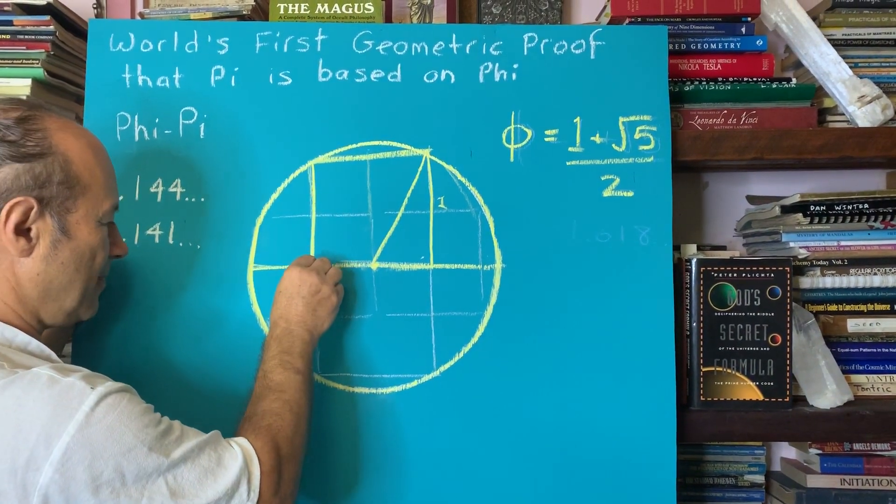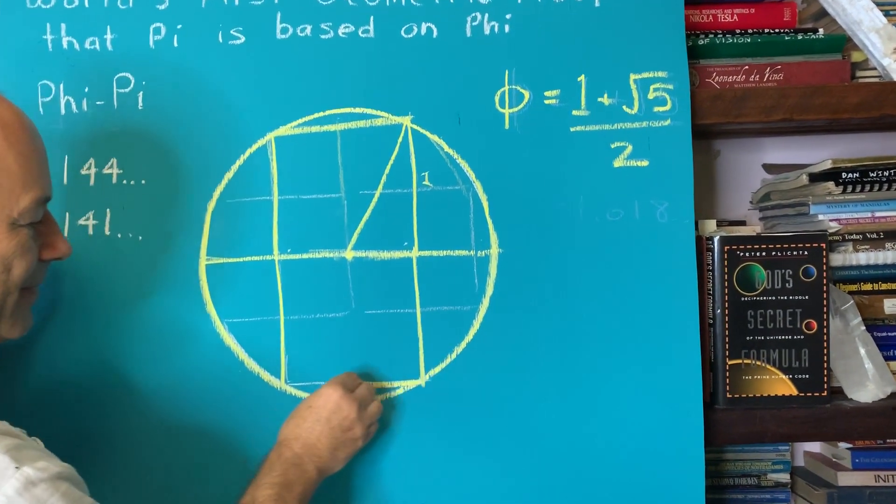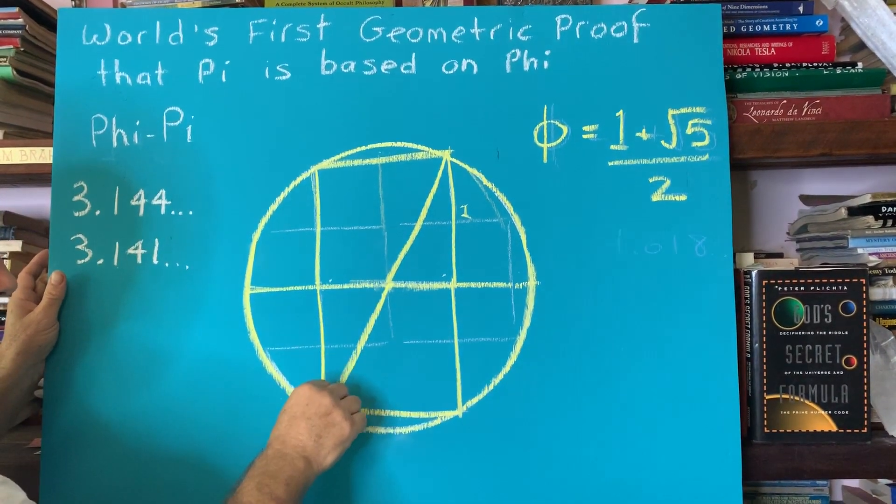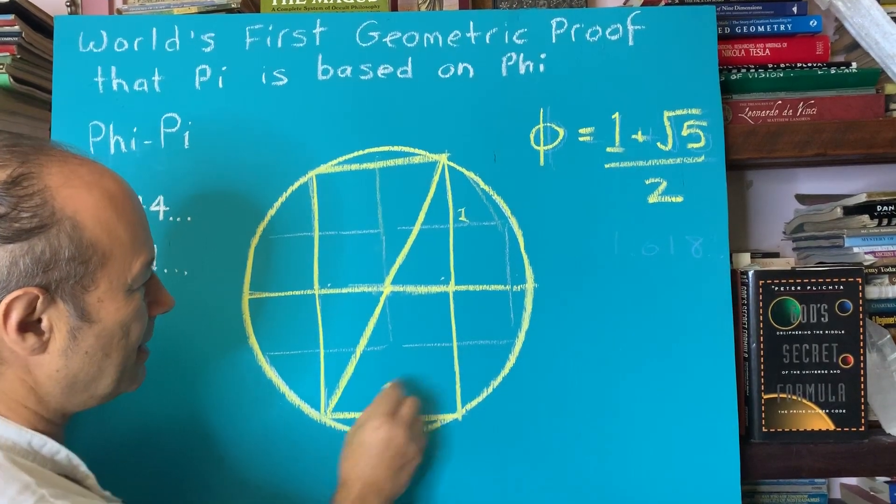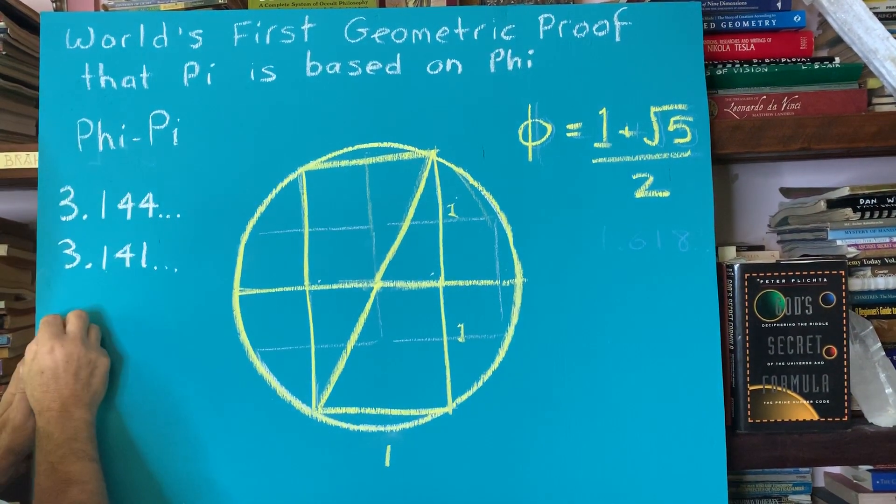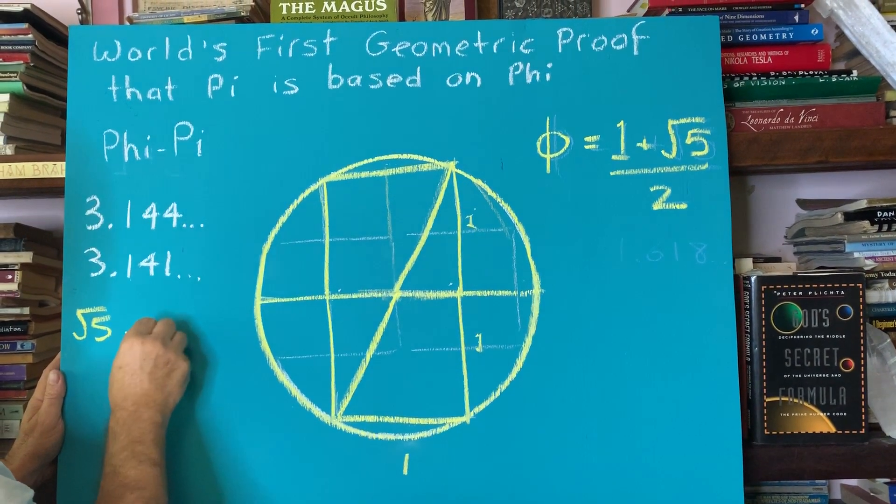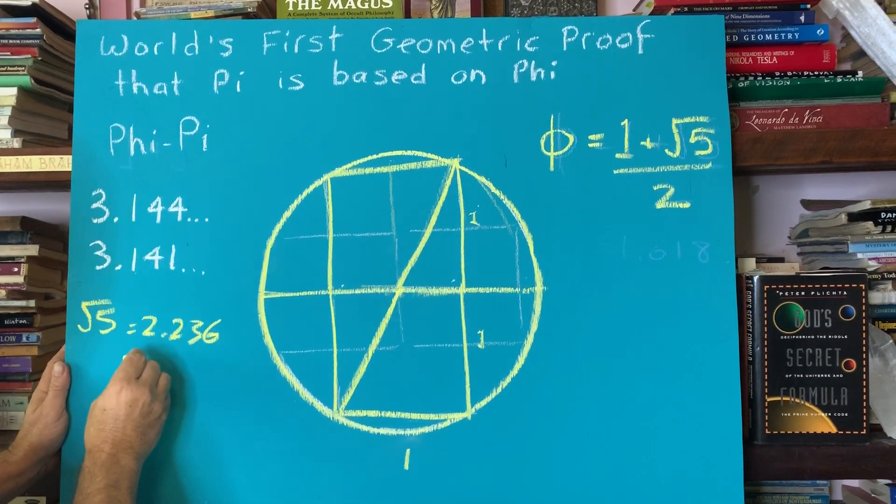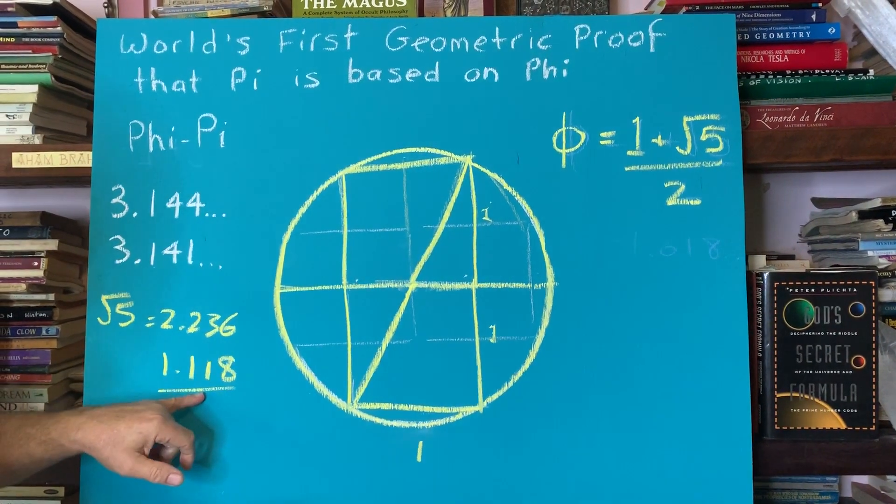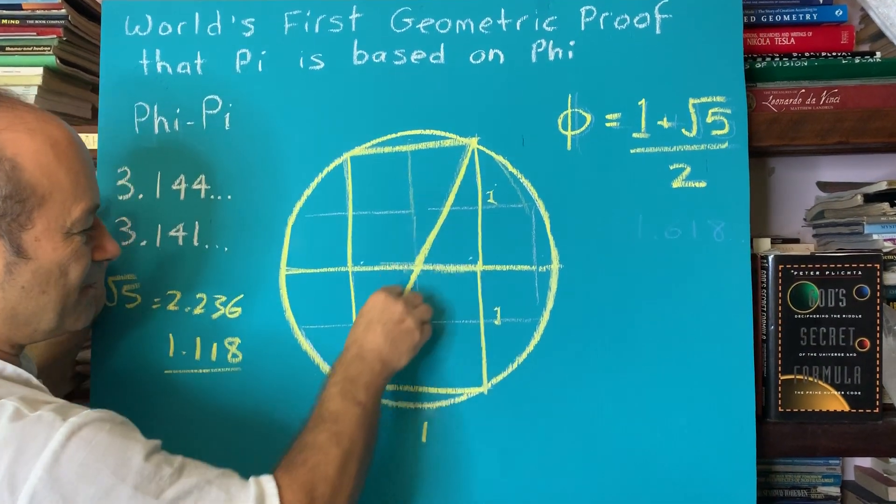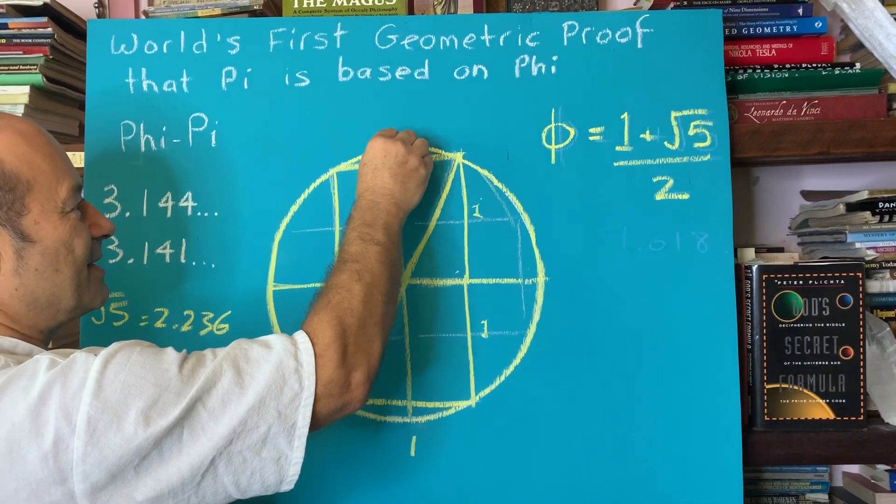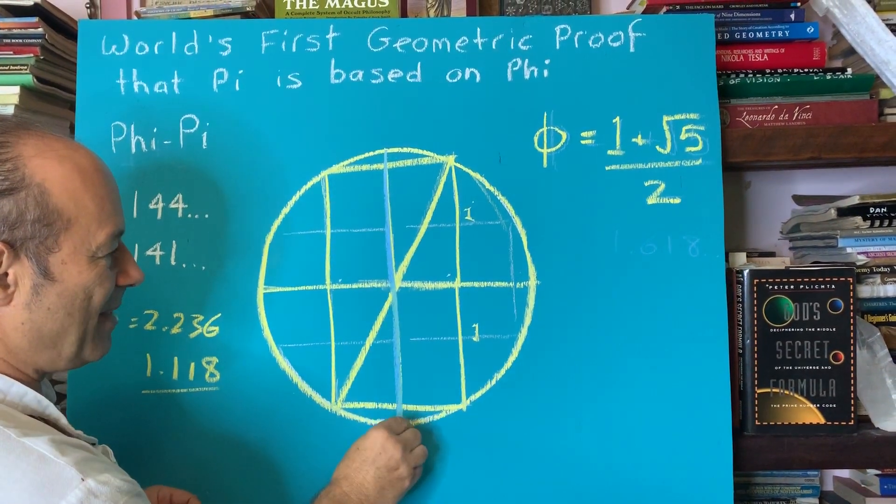So I'm going to draw what we call a double square. And according to Pythagoras' theorem, this long diagonal that goes through the center, this distance here, based on 1 to 1 and 1 is 2, this distance here is called root 5. So root 5 is roughly equals 2.236. And half of that is 1.118.